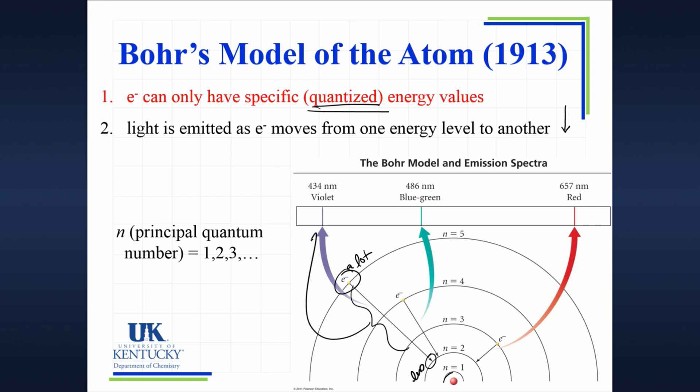And so that energy gets emitted as a photon of light. And the energy of that photon of light is exactly the energy associated with that line in the color spectrum.